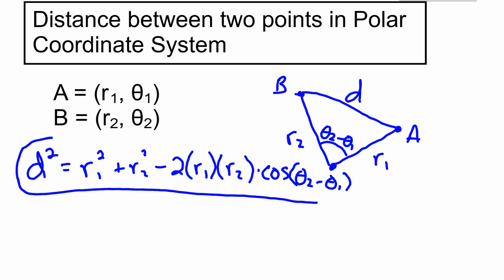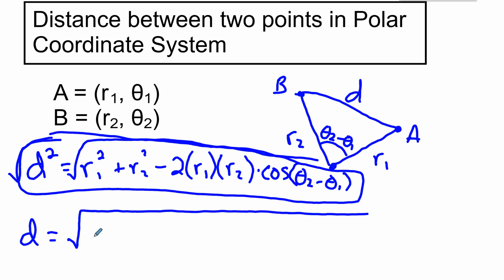So this is going to be our formula for the distance between any two points. Well, maybe we should do it for distance. So I'm going to square root both sides of this. So our final formula would be D equals the square root of R1 squared plus R2 squared minus 2 times R1 times R2 times the cosine of the difference between the two thetas. Theta 2 minus theta 1.